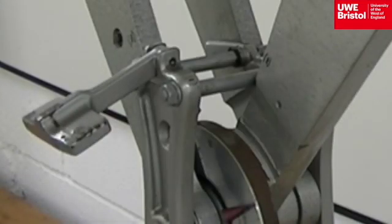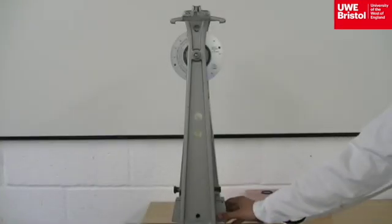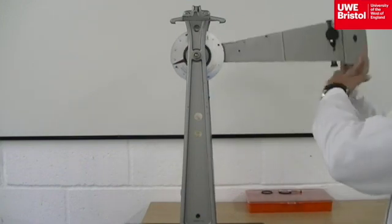To set the equipment ready for testing, ensure that the lever on the top of the tester, called the hammer, is forward before raising the heavy swing arms. When raised, the heavy arms need to be locked in position with the catches.